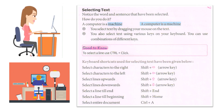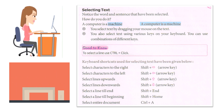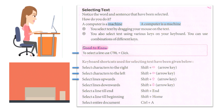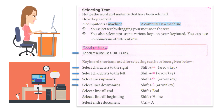Selecting Text: You select text by dragging your mouse over the text. You can also select text using various keys on your keyboard, and use combinations of different keys. To select a line: CTRL+Click. Select characters to the right: Shift+Right Arrow. Select characters to the left: Shift+Left Arrow. Select lines upwards: Shift+Up Arrow. Select lines downwards: Shift+Down Arrow. Select a line till end: Shift+End. Select a line till beginning: Shift+Home. Select entire document: CTRL+A.